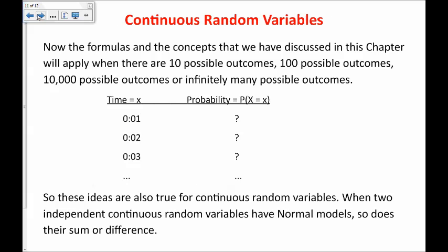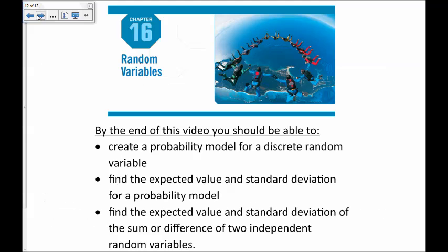The formulas and concepts discussed in this chapter apply whether there are 10, 100, 10,000, or infinitely many possible outcomes, which means they can also be used for continuous random variables. When two independent continuous random variables have normal models, so does their sum or difference. This video covered random variables, probability models, and the expected value and standard deviations for probability models. Thank you so much for watching.